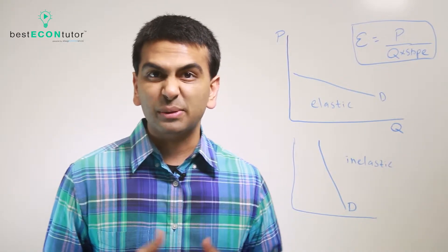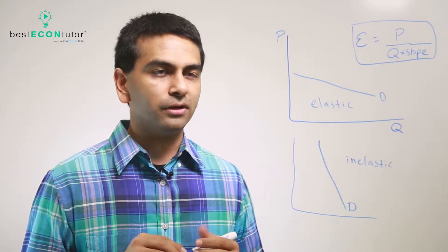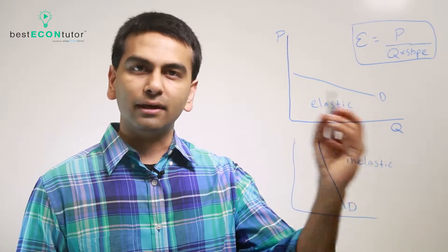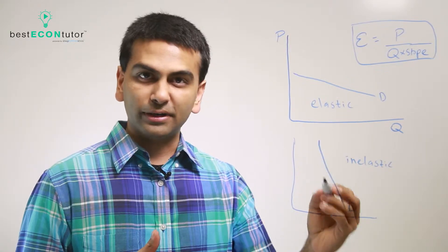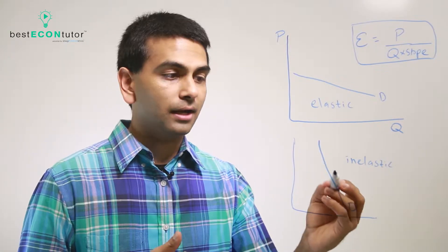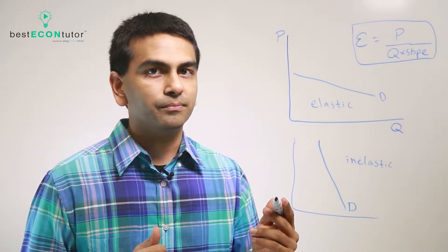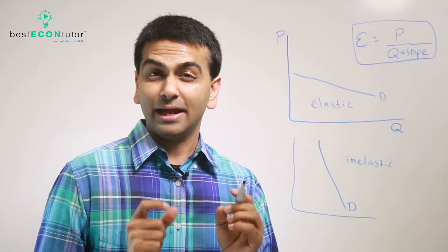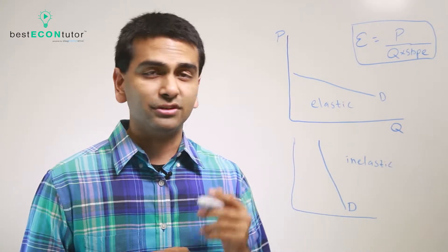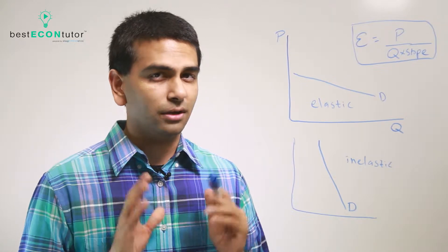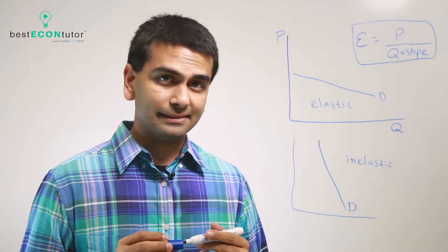One other thing we can look at is how elasticity is related to the slope of the demand curve. In general, a horizontal demand curve is more elastic, and steeper demand curves have more inelastic demand. Elasticity and slope aren't the exact same thing, but they're related that way. There's actually a formula you can derive using calculus, but you don't really need to know that for introductory economics.